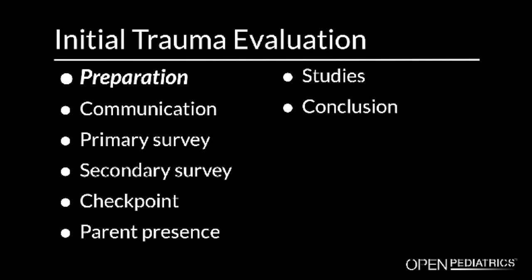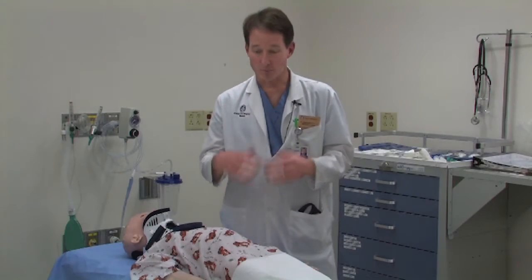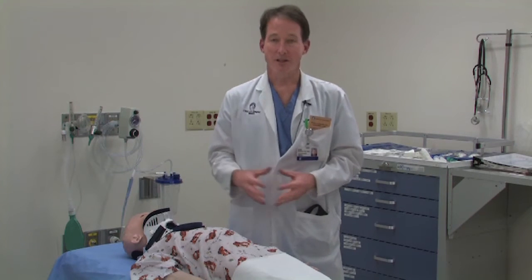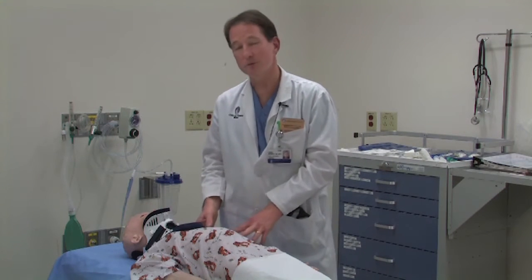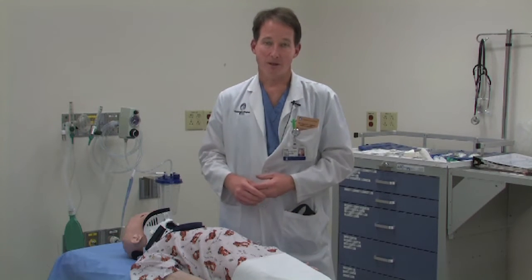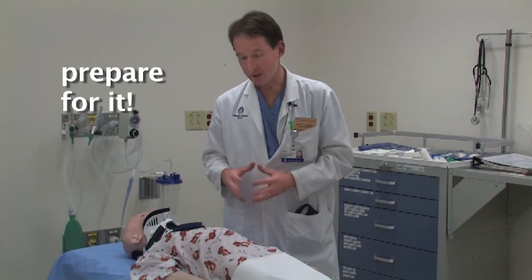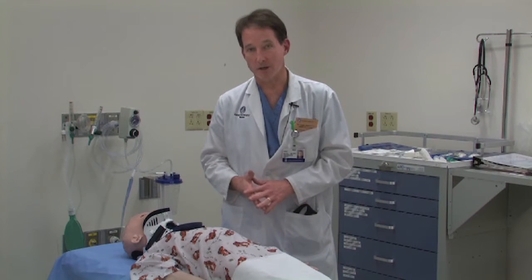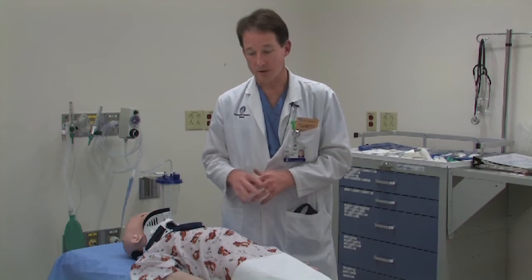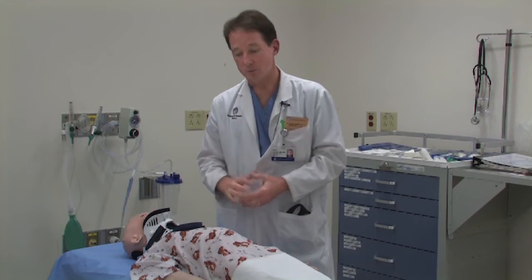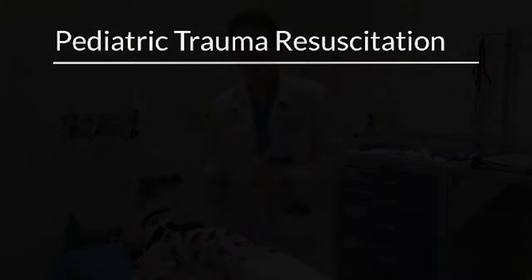Preparation. Pediatric trauma resuscitation is one of the exciting things we get to do. There's a lot of action, everyone's nervous, but the first thing that you need to do for pediatric trauma resuscitation is the really boring part — the preparing for it. It's very important what you do in advance well before the patient arrives so that you're ready when that happens. There are three things that you need to think about when you're thinking about how to do a pediatric trauma resuscitation.